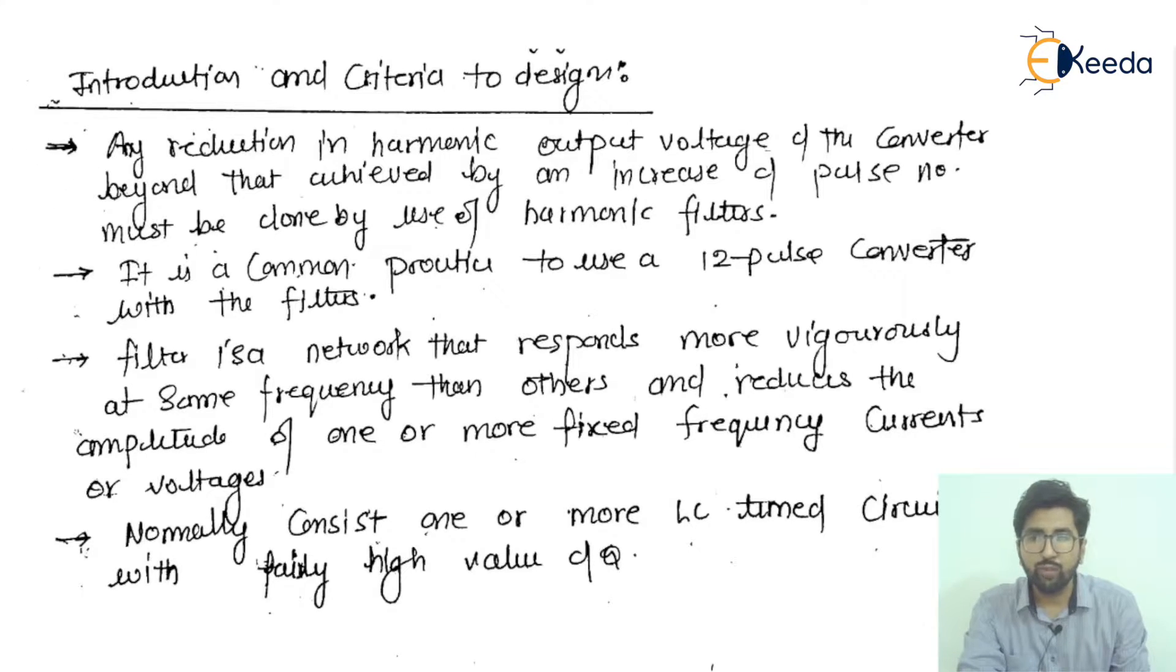Any reduction in the harmonic output voltage of the converter beyond that achieved by an increase in pulse number must be done by the use of harmonic filters. To define any output value, we have to reduce the harmonic content in that output voltage, which can be done by increasing the pulse number.